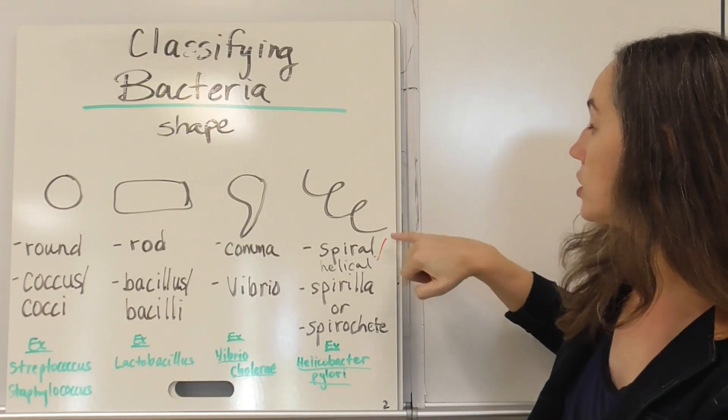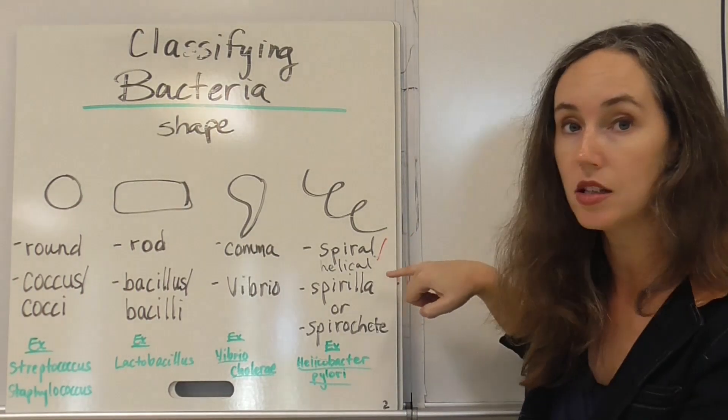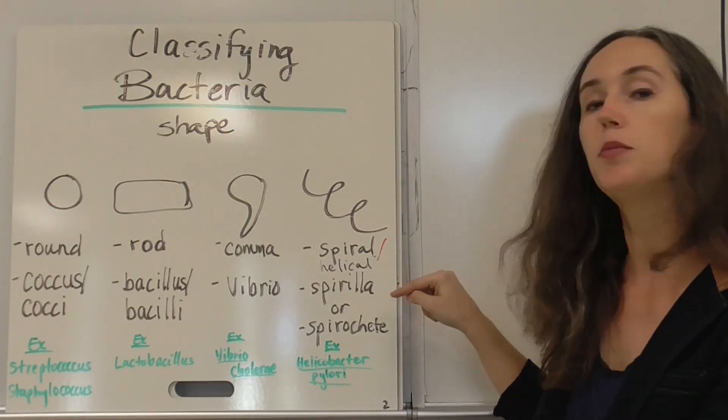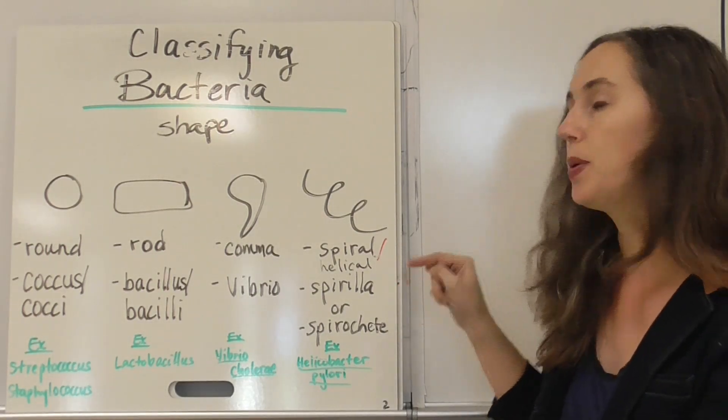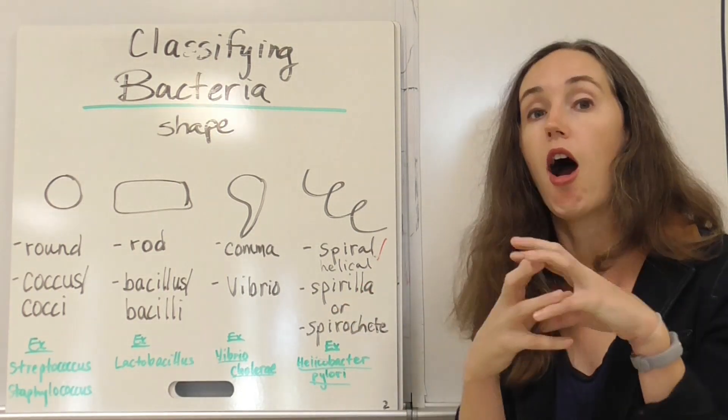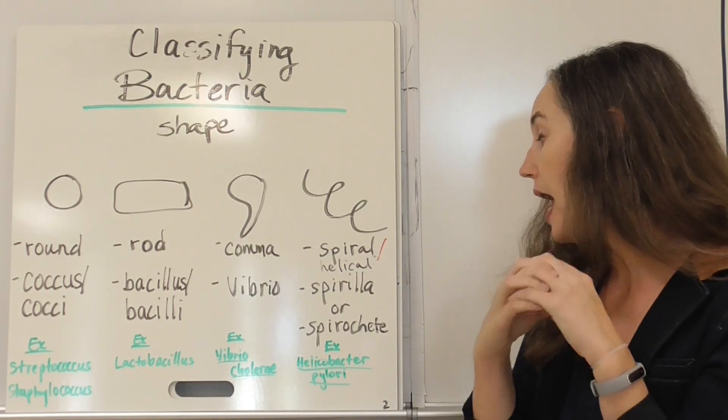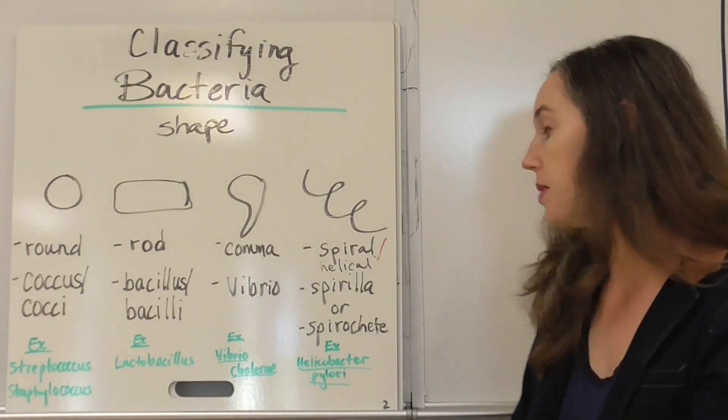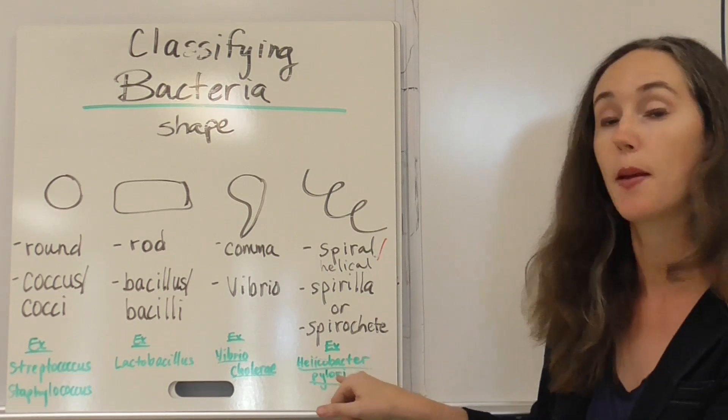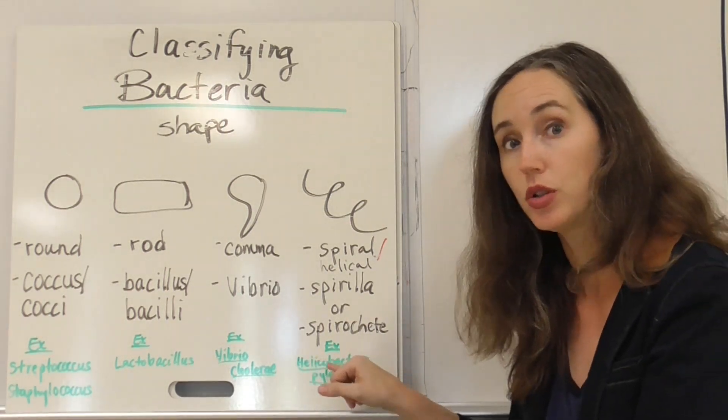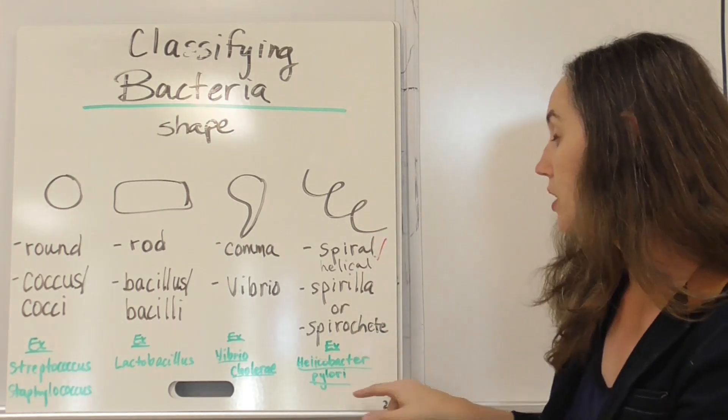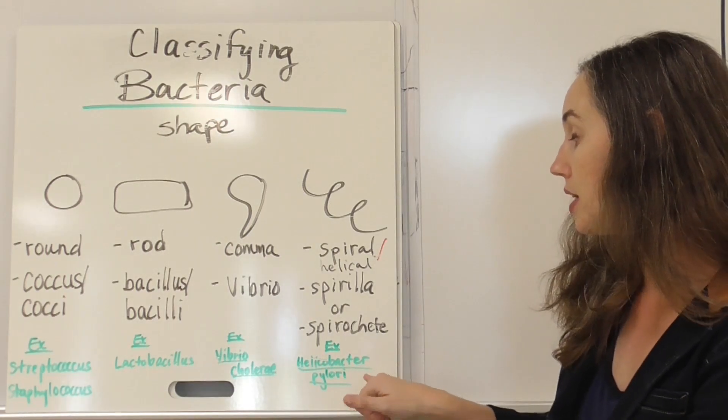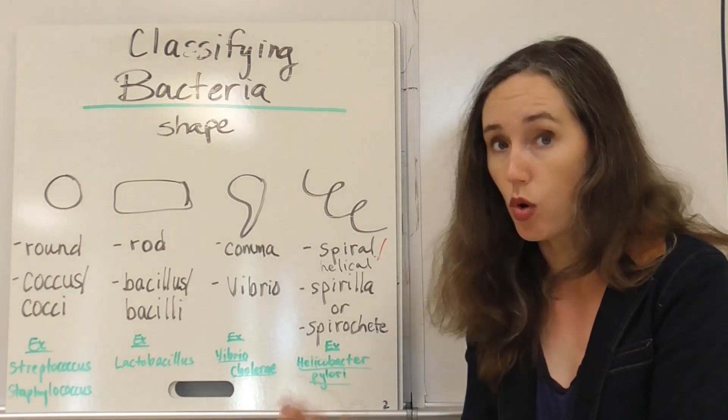And then there are spiral. Another name for spiral is helical shaped, like noodle looking bacteria. And these can be spirilla or spirochete, depending on the rigidity or flexibility of the spiral itself. An example here is helicobacter pylori. This is another one where the name helicobacter tells you it's a bacteria with a helical or spiral shape. And pylori, your pyloric valve is in your stomach. And so that lets you know that this is a bacteria that actually is one of the main causes of stomach ulcers.